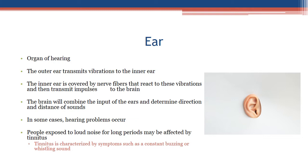Ear — organ of hearing: the outer ear transmits vibrations to the inner ear, which is covered by nerve fibers that react to these vibrations and transmit impulses to the brain. The brain combines input from both ears to determine the direction and distance of sounds. In some cases, hearing problems occur; people exposed to loud noise for long periods may be affected by tinnitus, characterized by a constant buzzing or whistling sound.